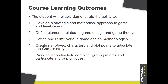What follows are the course learning outcomes, which are basically an agreement that the school and my program have with you, the student. If you have worked hard in this course, you will be able to reliably demonstrate certain abilities. These five abilities are what we think you'll be able to do once you're finished: develop a strategic and methodical approach to game and level design; define elements related to game design and game theory; define and utilize various game design methodologies; create narratives, characters, and plot points to articulate the game's story; and work collaboratively to complete group projects and participate in group critiques.